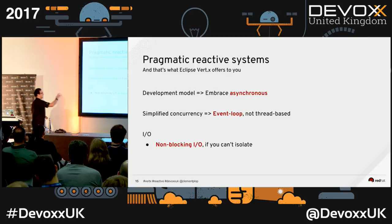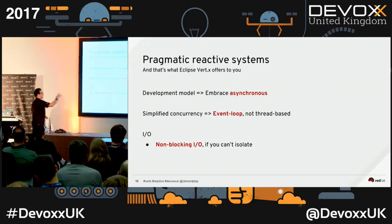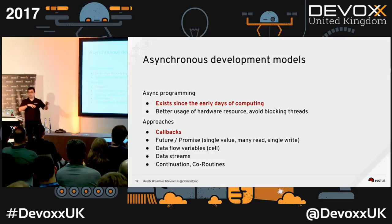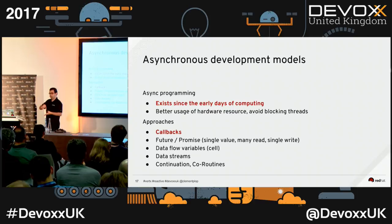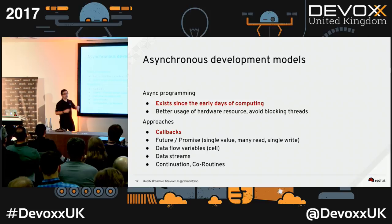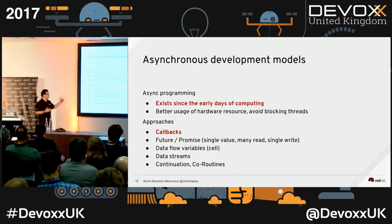All of this brings you to the asynchronous non-blocking development model. Asynchronous development existed in the early days of computing — keystrokes, interrupts, signals — everything is asynchronous. Since the 80s, because we thought developers couldn't understand asynchronous, we made things synchronous. There are different approaches: callbacks, futures and promises, dataflow variables, data streams, or continuations and coroutines.